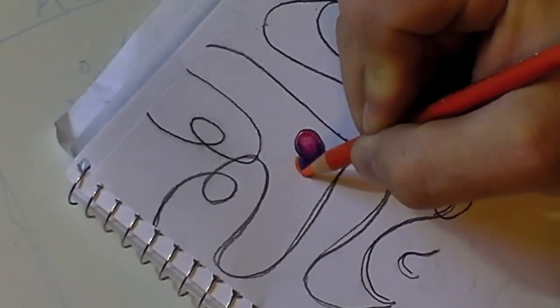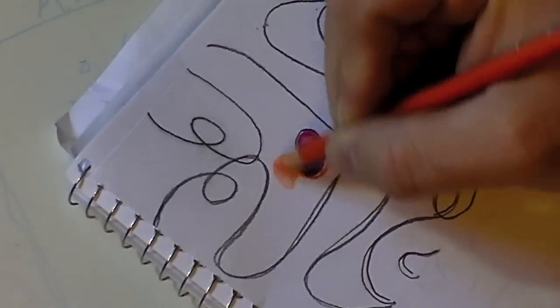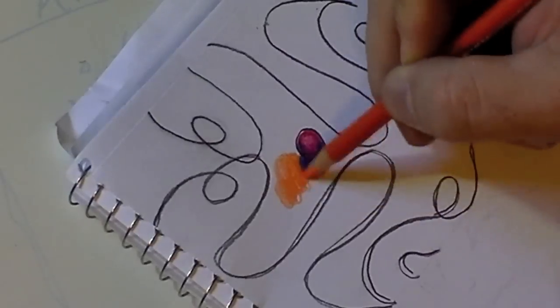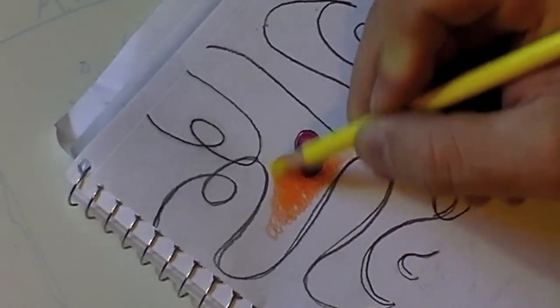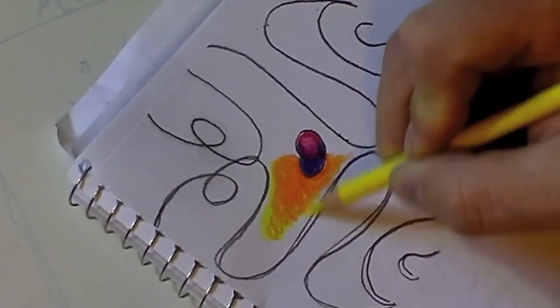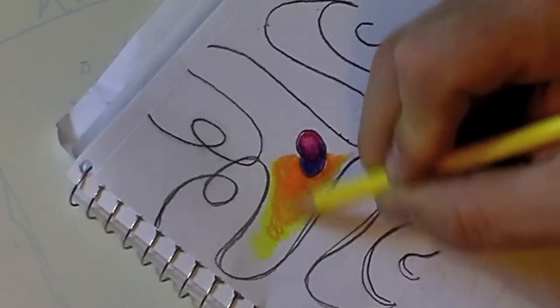So I took purple and transitioned it into red and lightened that. And to make the purple separate from the color next to it, I used orange because orange is warm and purple is cool. And then I blended orange with yellow. So it would transition over.